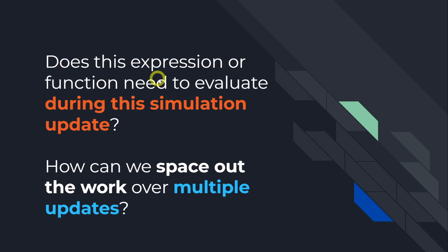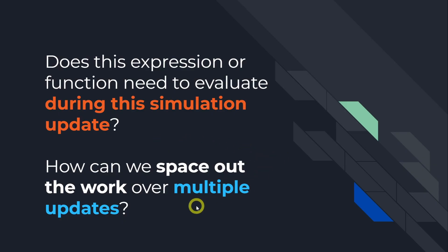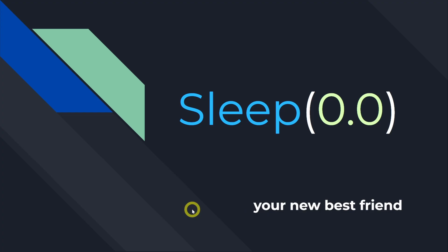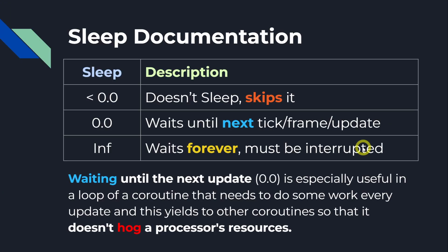These are the important questions we need to ask when going through our codebase: Does this expression or function need to evaluate during this simulation update, or can it span multiple updates? How can we space out that work over multiple updates? What is the correct amount of work we're doing per update? Now let me introduce you to your new best friend: SleepZero. SleepZero will wait until the next tick update to continue working.